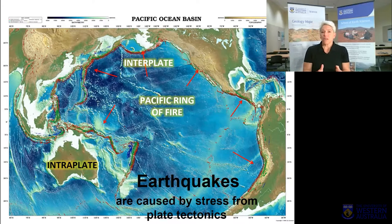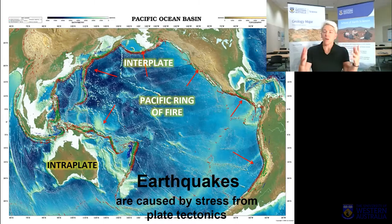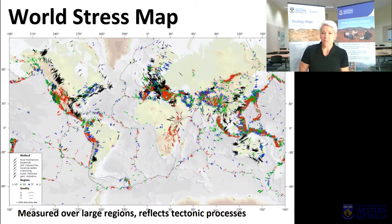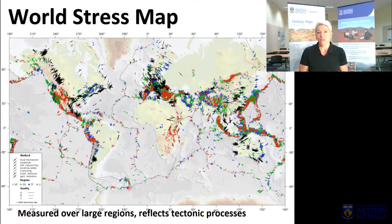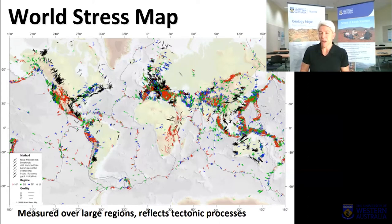All earthquakes are caused by the same mechanism: stress caused by plate tectonics. You've got these plates moving around the globe, clashing into each other, causing stresses — that is the cause of every earthquake on the planet. There is something called the World Stress Map, which tells you where the greatest stress is on the planet. The Pacific Ring of Fire is very well represented. Because we are so far from the plate boundary, we do have stress and it does cause earthquakes, but we're not in the same category as Indonesia, Japan, or California.